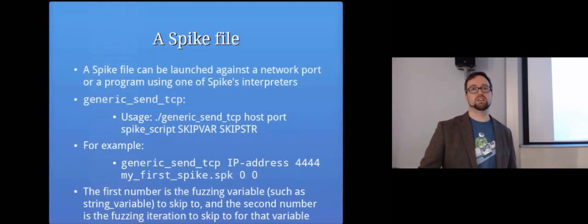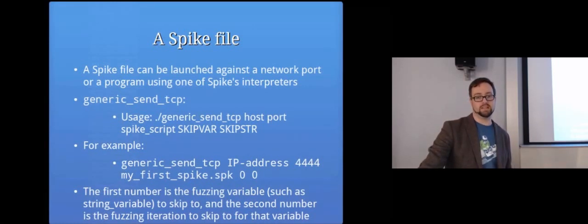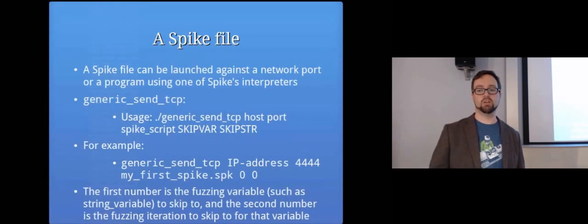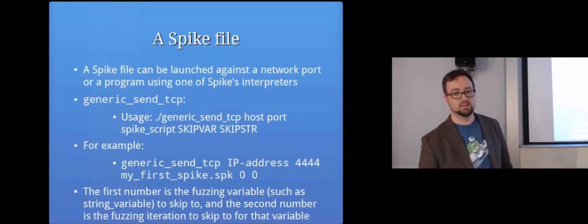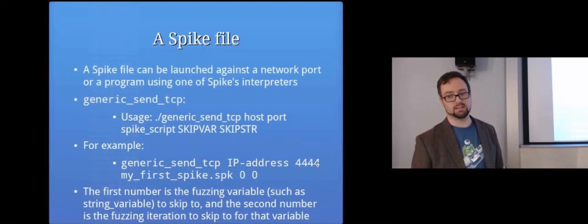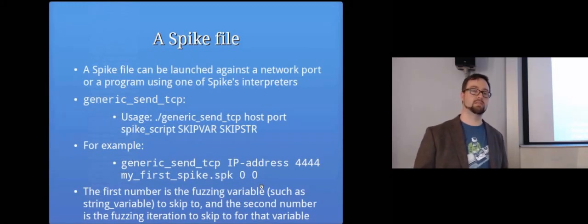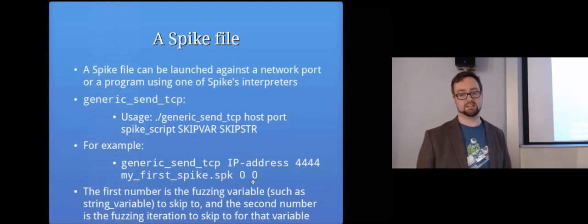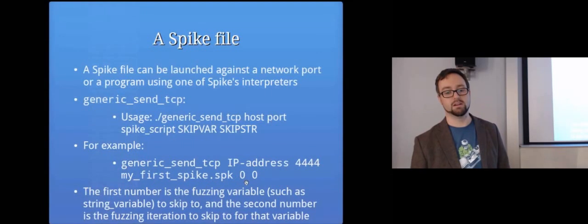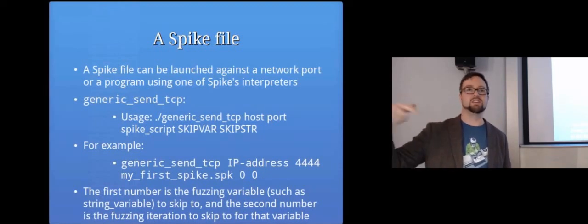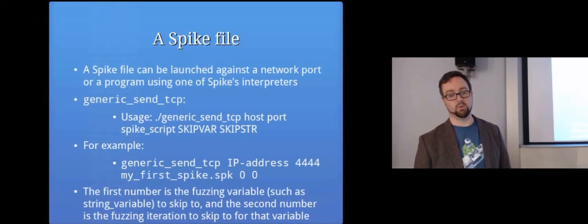So once you've got your spike file, you can launch it against a program in various ways. If you use generic_send_tcp, you can basically fire it off against a host on a specific port, and it will connect via TCP, and then do the things that it's in the script. So for example, if you did generic_send_tcp, and then the IP address of the server you want to connect it to, and then the port you want it to connect it to, the name of your script, and then these last two numbers, whether or not you want it to skip further ahead. So for example, if you've paused the fuzzing, and you want to resume it later, you can tell it to like start at variable one, or variable two, variable three, whatever, and how skip into the 100th iteration of mutating that variable kind of thing. So you can tell it where to start basically.